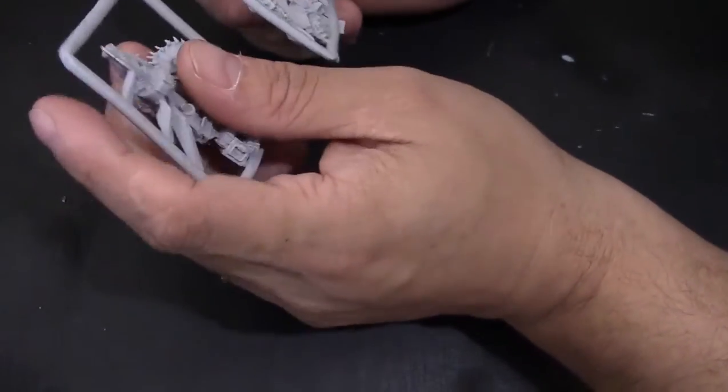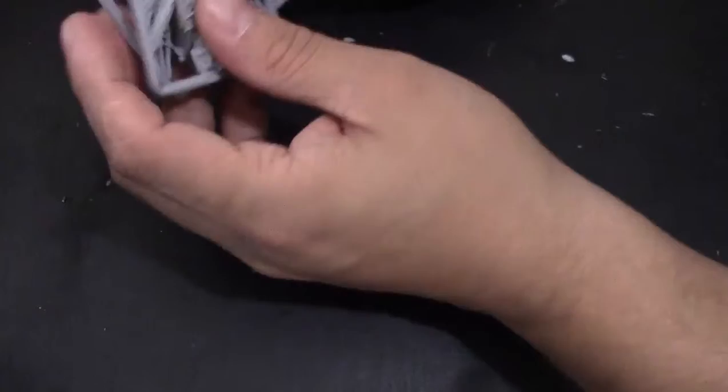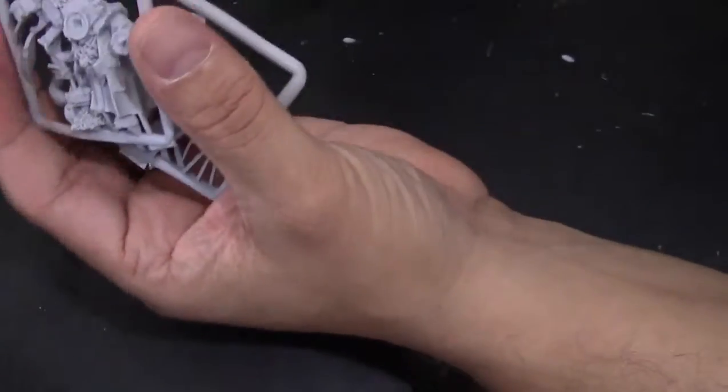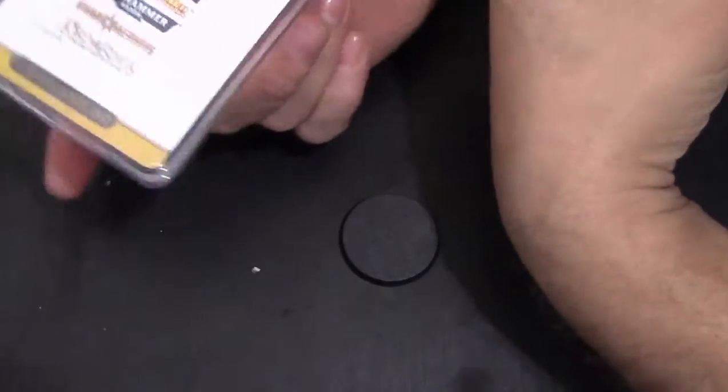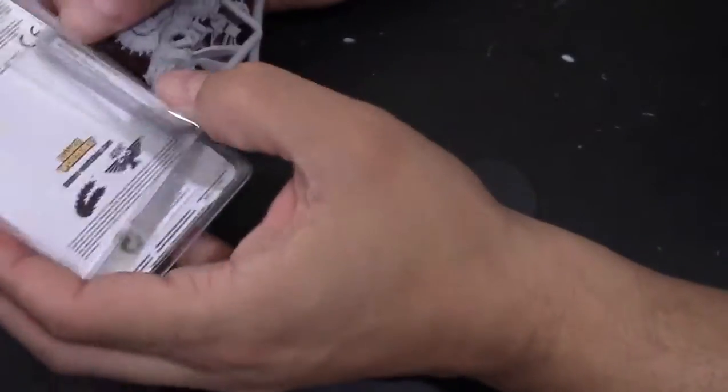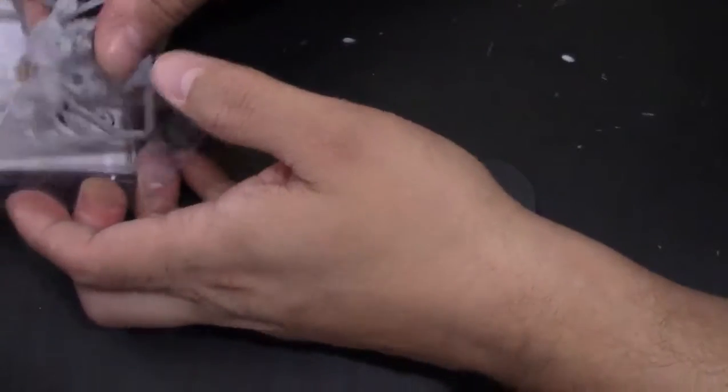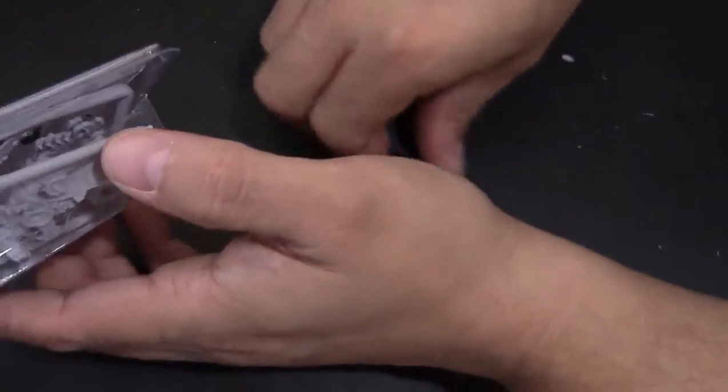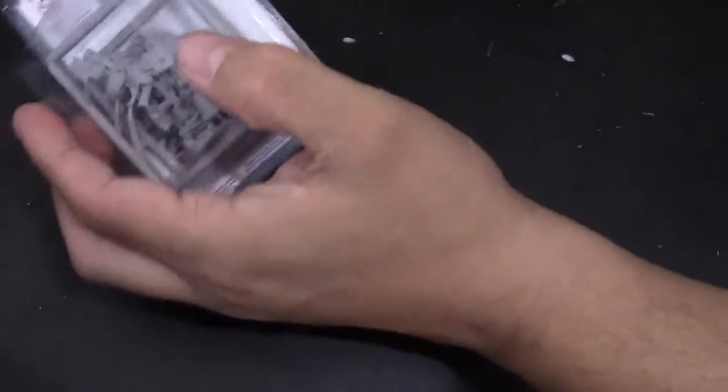All right guys, this is what comes on the sprue when you get Captain Badrukk. It doesn't have a pretty picture on there at all, but I found that is true with a lot of the resin models. They're coming in these kind of plain packages. Oh, and you get a bigger base for him right there, cool.